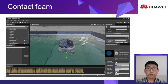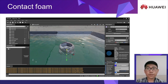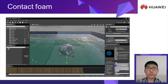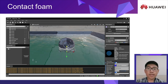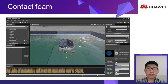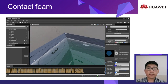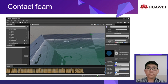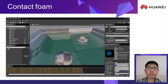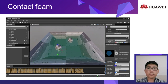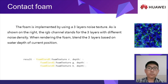On rendering the water surface, we also need to consider foam. There are usually three types of foam: wavetip foam, contact foam, and interact foam. For this water system, I have implemented the contact foam. The contact foam appears where the water contacts other objects in real time. Contact or not is decided by the view depth difference between the water and other objects. On the right is the foam texture — it is a three-layer noise texture. Blending the three layers with different depth-based methods gives the final foam result.